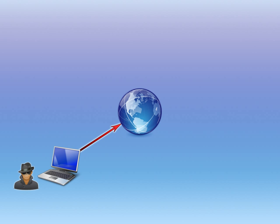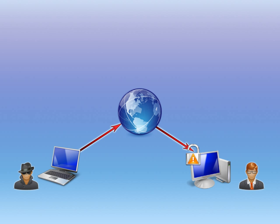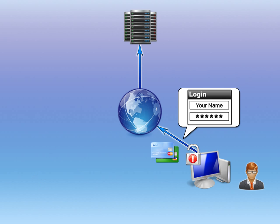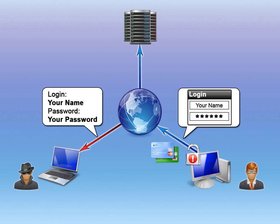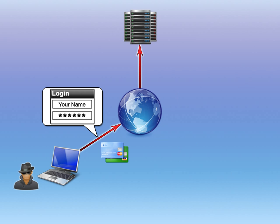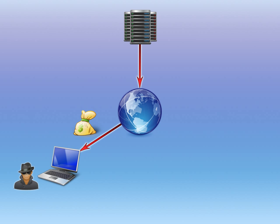Here is an example of how keyloggers can be used by hackers. A hacker posts a keylogger to the internet. While surfing the internet, the user gets a keylogger that is secretly installed on his PC. The user logs into his bank account. The keylogger intercepts the login details and sends them to the hacker. The hacker logs into the bank account of the user and makes money transferred to his own account.